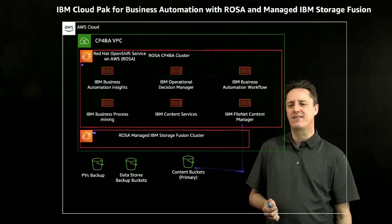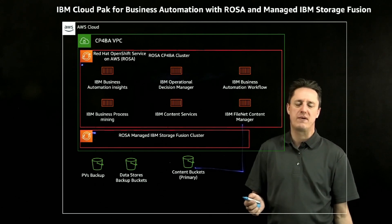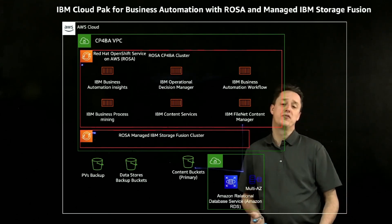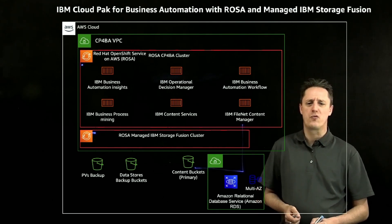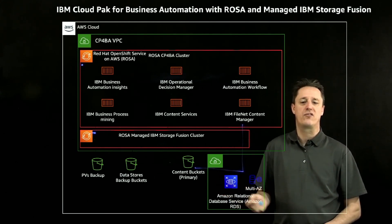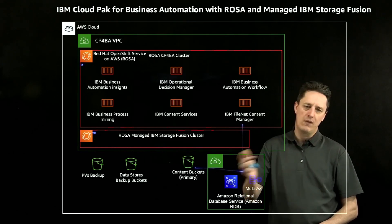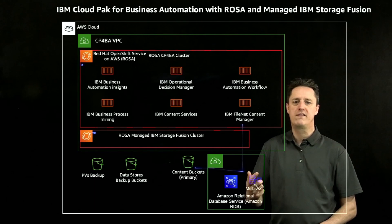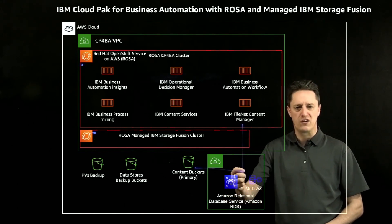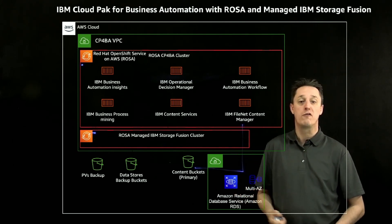The other S3 buckets relate to the backup and restore process that IBM's Cloud Pak for Business Automation takes advantage of as a workload running on top of OpenShift. For the relational database, rather than running something inside OpenShift, we shift that storage externally — taking advantage of Amazon's Relational Database Service RDS, deploying a multi-AZ implementation. If there is a failure, we can fail over to a secondary database in another availability zone for business continuity. The benefit of shifting storage out means we don't have to worry about persistent volume claims for a relational database in the OpenShift environment.